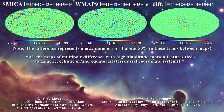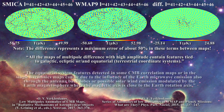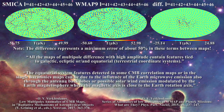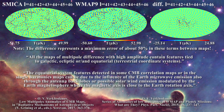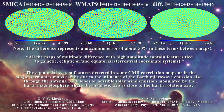That should give everyone pause relative to the validity of the CMB images. Verkhodanov further emphasized that differences between WMAP and Planck power spectra were related to differences in map preparation. He noted that equatorial system features detected in some CMB correlation maps or in single harmonic maps can be due to the influence of Earth microwave emission, through antenna back lobes or possible solar wind emissions modulated by the Earth's magnetosphere. The problem for cosmology is that if all the anomalies in the low-L data can be linked to local sources such as the ecliptic and the Earth, this implies the entire maps have nothing to do with cosmology.